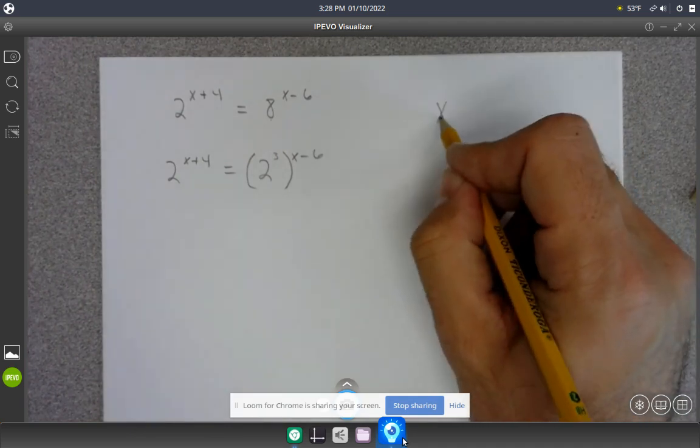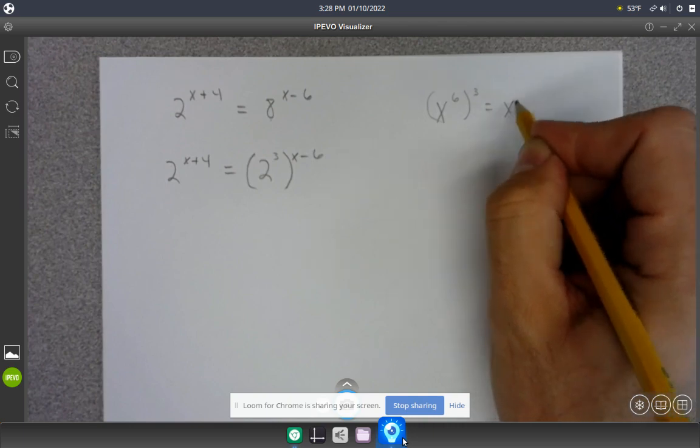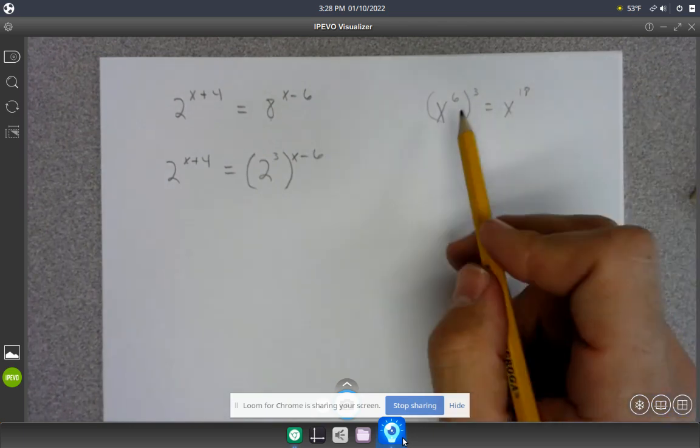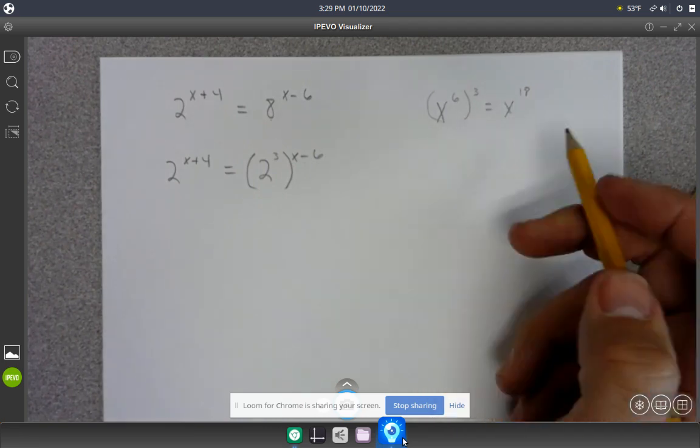Like if I had x to the 6th raised to the third power, that would be the same as x to the 18th, because you're doing x to the 6th times x to the 6th three times. So that ends up just being multiplication.